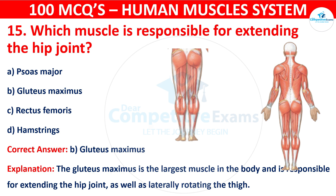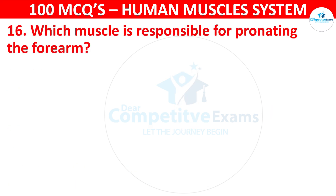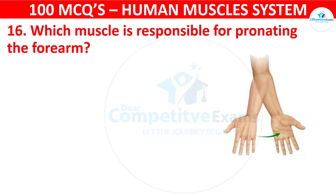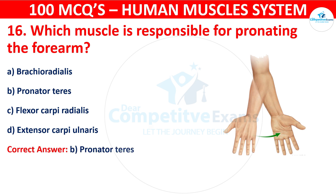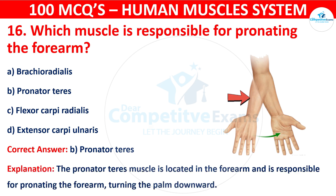Question number sixteen: Which muscle is responsible for pronating the forearm? Your options are: Brachioradialis, Pronator teres, Flexor carpi radialis, or Extensor carpi ulnaris. The correct answer is B, that is pronator teres. The pronator teres muscle is located in the forearm and is responsible for pronating the forearm, turning the palm downward.